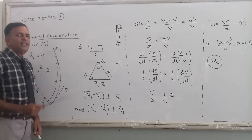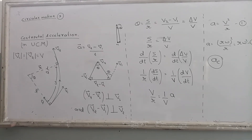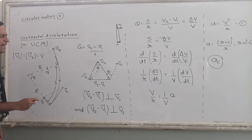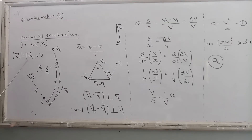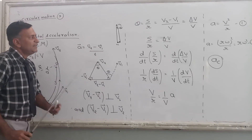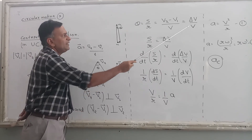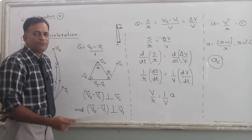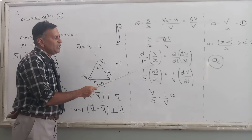Now finding the magnitude: I will use theta from both diagrams. From the circle diagram, theta equals arc upon radius. From the velocity vector diagram, theta equals arc upon radius, where the radius is the magnitude of v2, which equals v. And the arc is the magnitude of v2 minus v1, which is the change in velocity. So comparing: s/r equals delta v upon v.